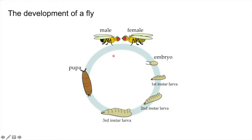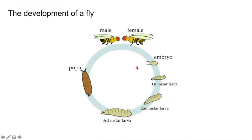The development of the fly consists of a few main stages. First, female flies lay embryos. The embryos then develop and hatch to form larvae. Larvae then grow and grow and eventually form a pupa. Finally, fully formed flies hatch from the pupa. My research focuses on the early embryonic development of the fly, so this stage here.